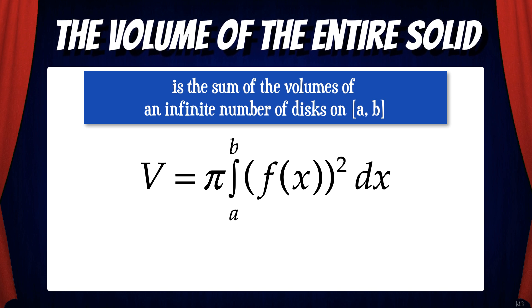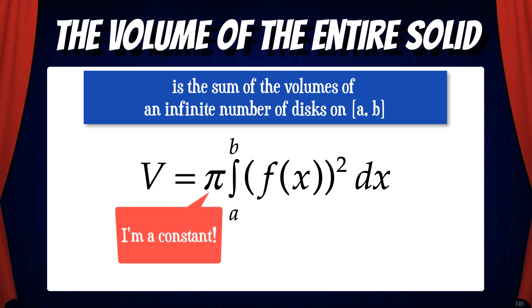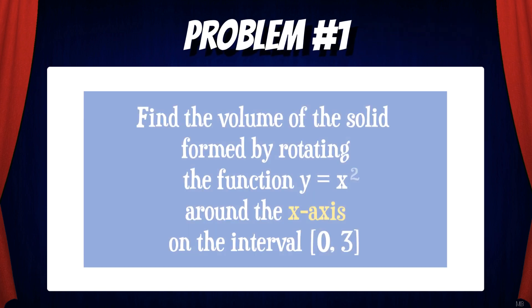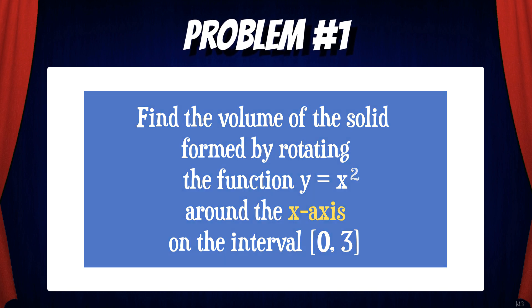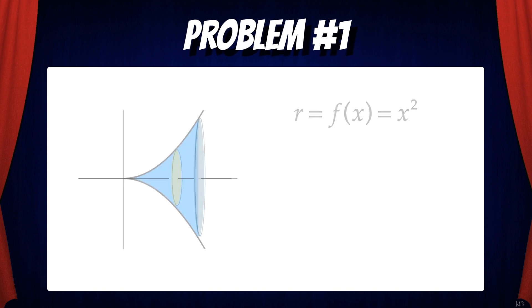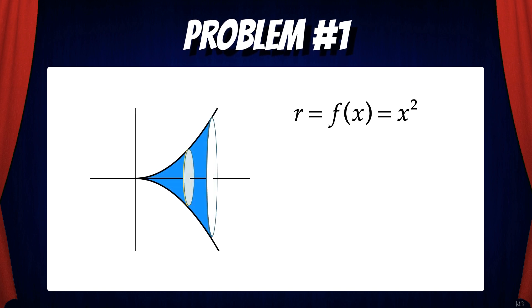Note that π can be brought outside the integral because it's a constant. Let's do an example problem. Find the volume of the solid formed by rotating the function y = x² around the x-axis on the interval [0, 3]. In this case, the radius of each disk is f(x), which is x².